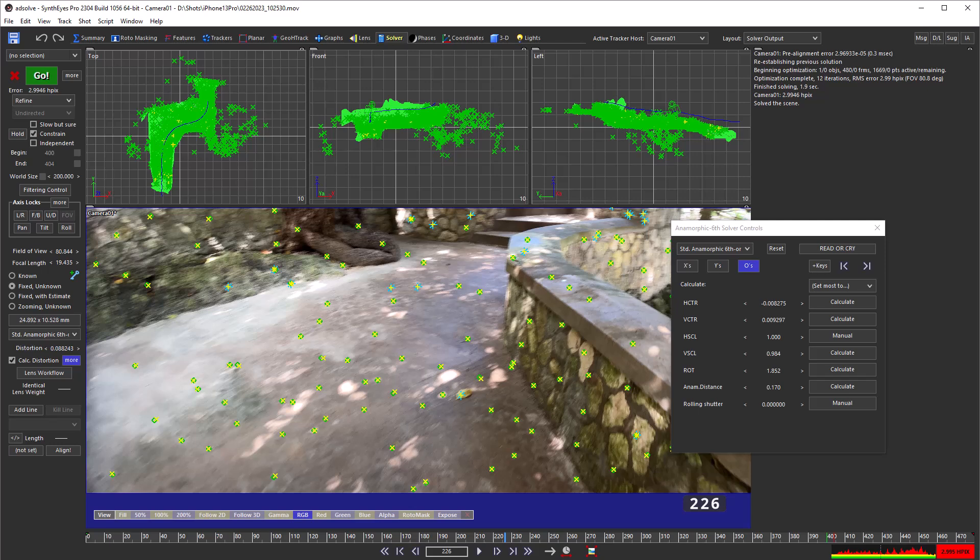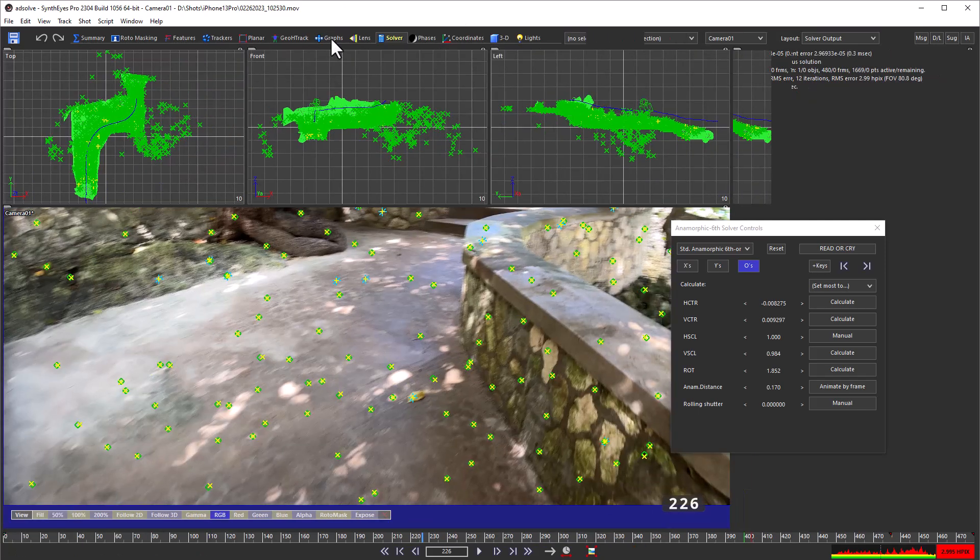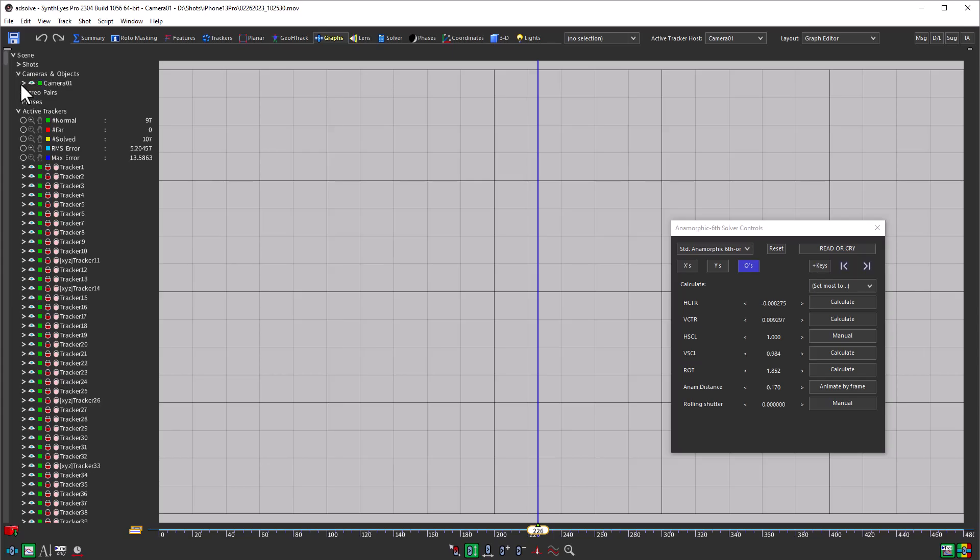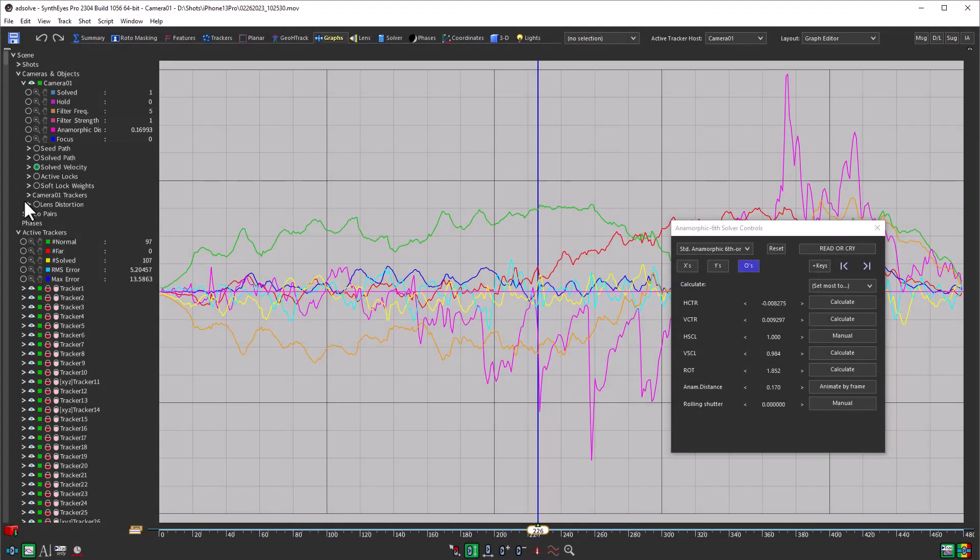On shots with focus pulls, you'll want to use Animate by Frame and Animate on Keys mode for the anamorphic distance. You'll find anamorphic distance in the graph editor directly under the camera, not under the lens distortion, because, let's say it all together, anamorphic distance isn't a lens distortion.